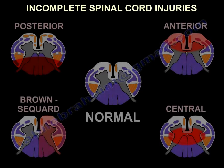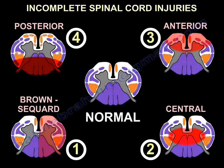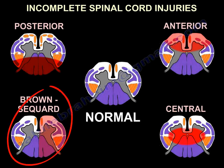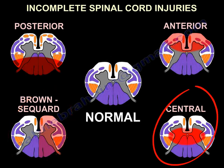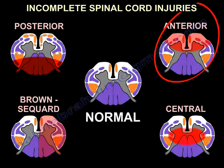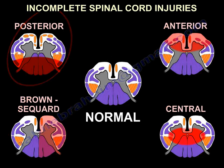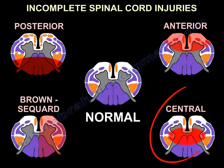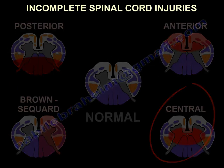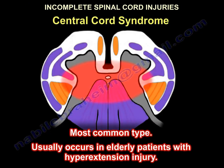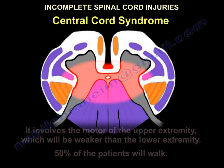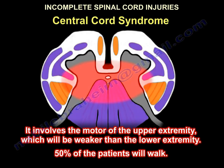When we talk about incomplete injury, there are four types: Brown-Séquard, central cord, anterior cord, and posterior cord. Central cord is the most common. It happens usually in elderly patients with hyperextension injury. It involves the motor of the upper extremity, which will be weaker than the lower extremity, and 50% of patients will walk.